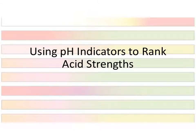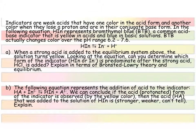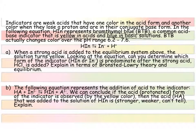You can use pH indicators to help you rank the strengths of acids. We have our generic formula for an acid indicator. In this case, we are talking about bromothymol blue, which is a very common indicator. It's yellow when it's in acids, and it's blue when it's in bases. The pH range with which it transitions is 6.2 to 7.6.